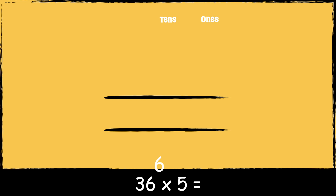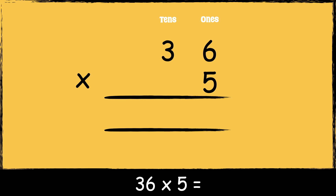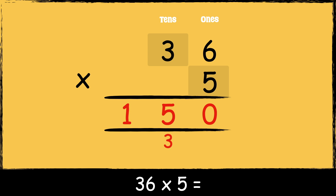The number 36 has six ones and three tens. The number 5 has five ones. So now that we're set up, we're ready to multiply. First we're going to multiply five by six: five times six is thirty. We carry the three below in the tens column because it represents three tens. Next we multiply five by three tens: five times three is fifteen. We add the three tens below, so fifteen add three is eighteen. We're now into the hundreds column, so the answer is one hundred and eighty.